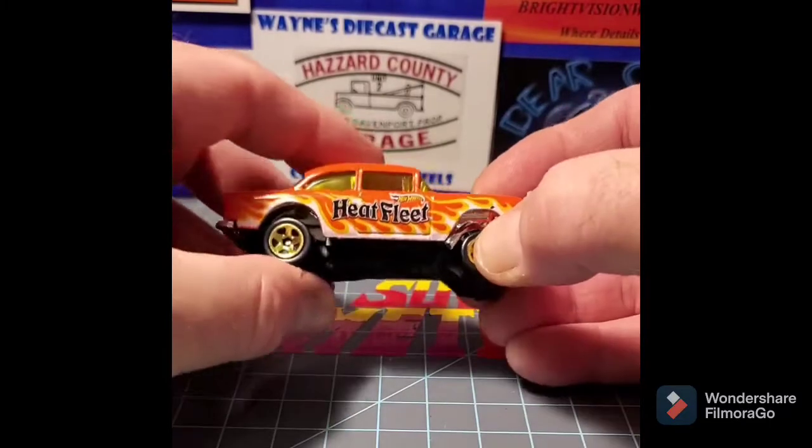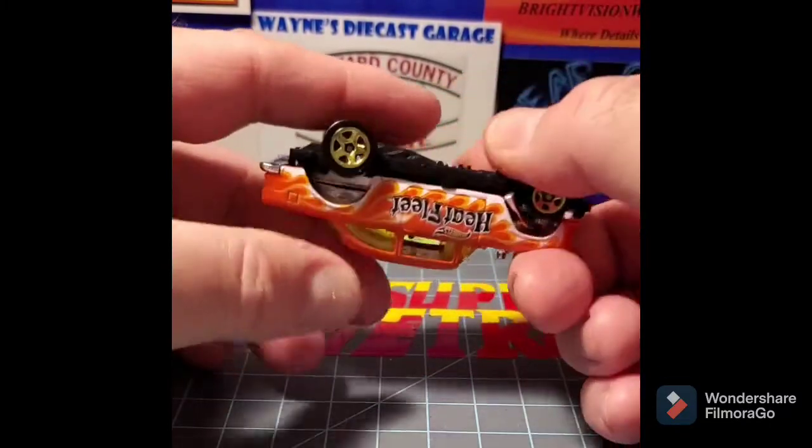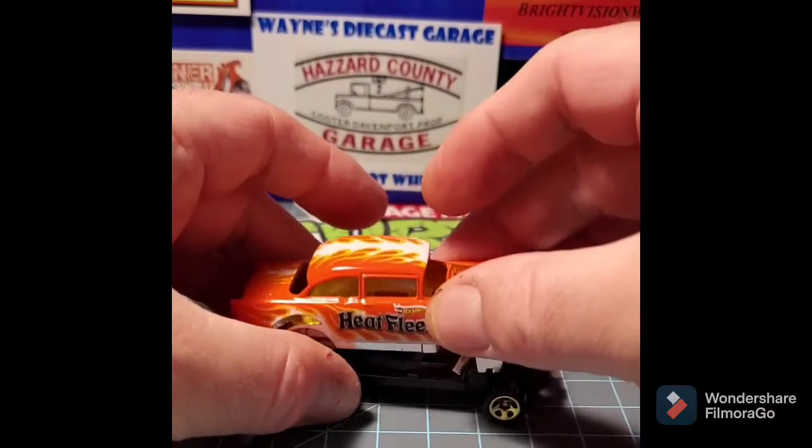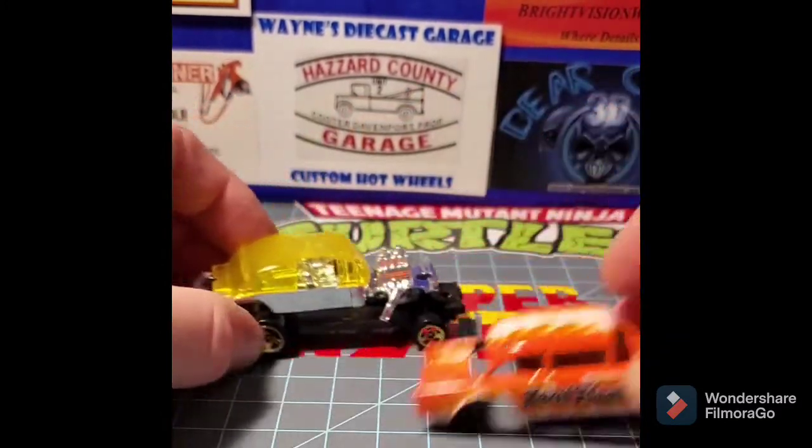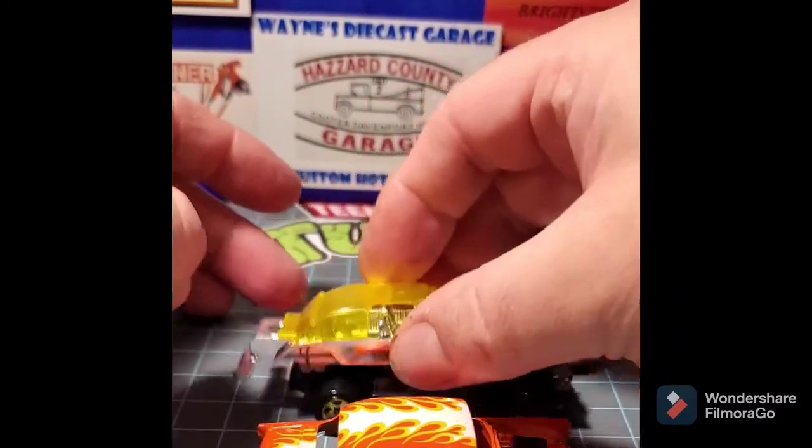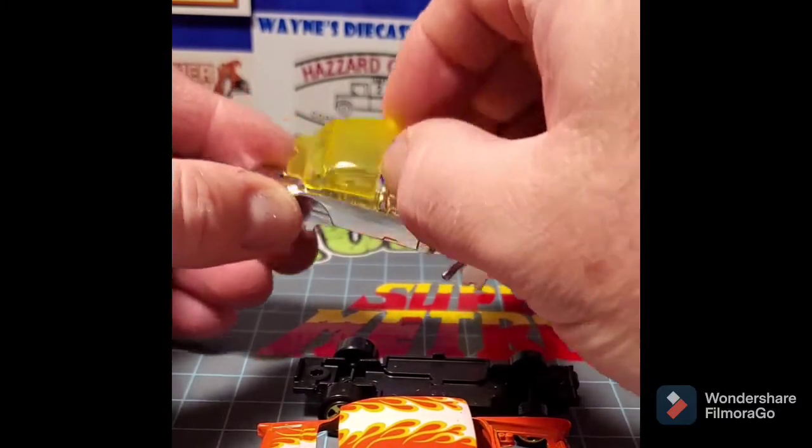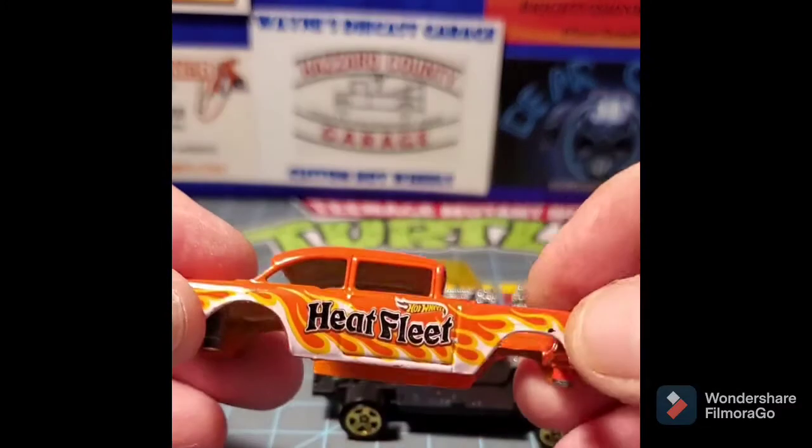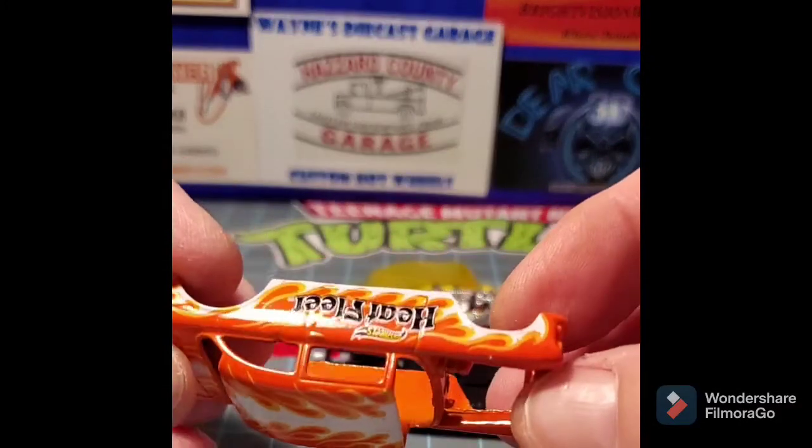All right, y'all. This is, like I said, a very popular casting. The 55 Gasser is just, it is what it is, along with square bodies or whatever. Square body being a very popular casting too.